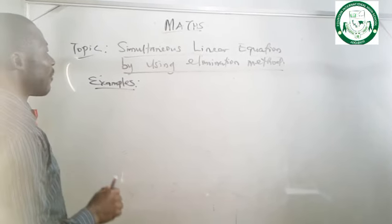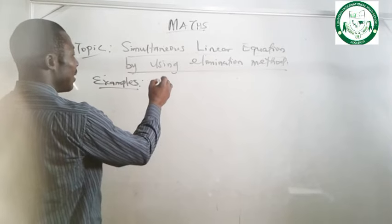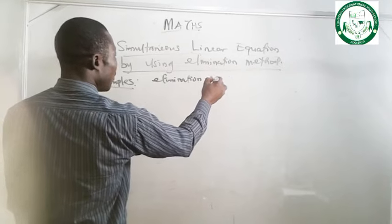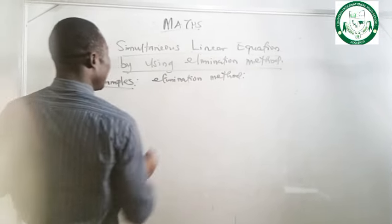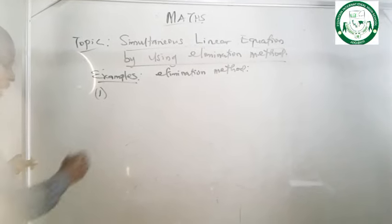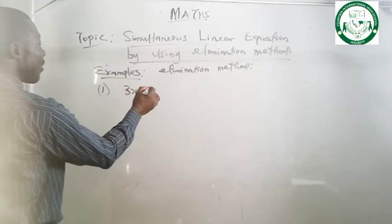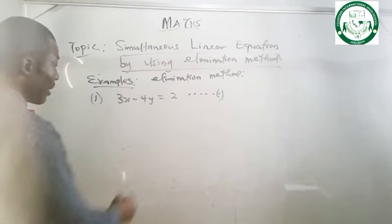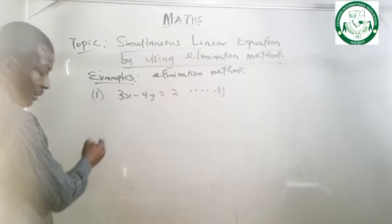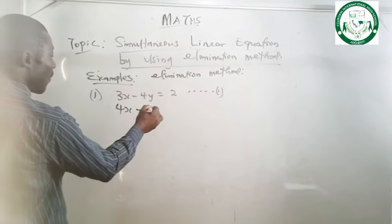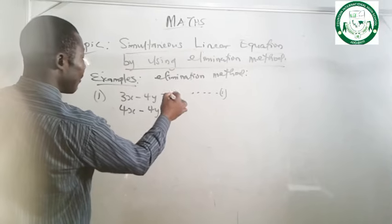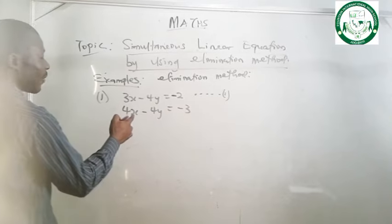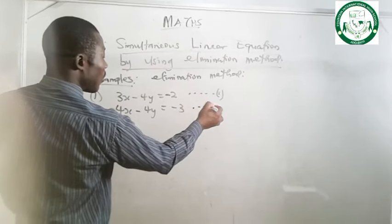We have to solve the following simultaneous linear equations by using elimination method. Example number one: 3x minus 4y equals to minus 2. This one is equation 1. And the second equation says 4x minus 4y equals to minus 3. This is equation 2.